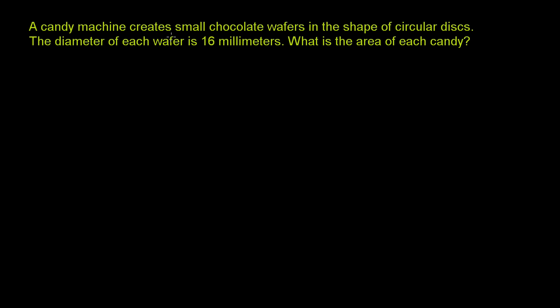A candy machine creates small chocolate wafers in the shape of circular disks. The diameter of each wafer is 16 millimeters. What is the area of each candy, of each wafer?